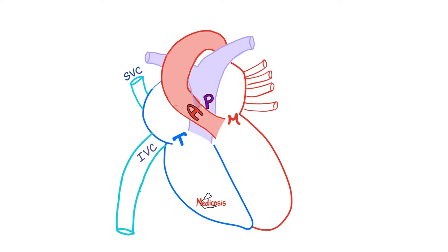The heart has four valves: mitral valve, tricuspid valve, aortic valve, and the pulmonic valve. The mitral valve is between the left atrium and the left ventricle. The tricuspid lies between the right atrium and the right ventricle. The aortic valve is between the left ventricle and the aorta, whereas the pulmonic valve is between the right ventricle and the pulmonary trunk.